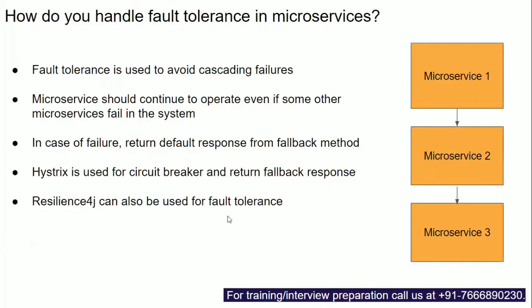The next question is: how do you handle fault tolerance in microservices? Fault tolerance addresses the scenario where one microservice is down — for example, microservice 3 is down. When you call microservice 1, it calls microservice 2, which calls microservice 3. Since microservice 3 is down, the failure cascades to microservice 2 and then to microservice 1.